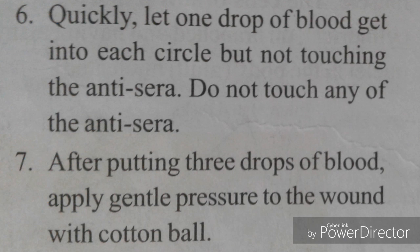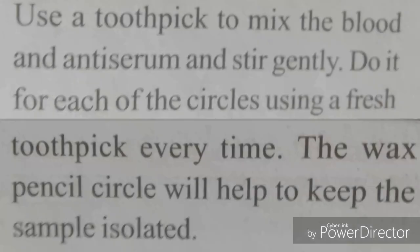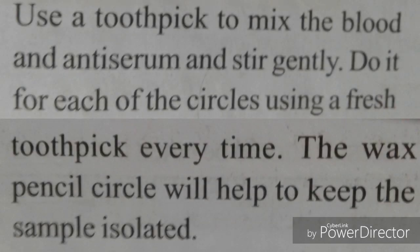Step 7: After putting 3 drops of blood, apply gentle pressure to the wound with the cotton ball. Dispose of the needle you have used — it is a disposable needle and should not be used by another individual. Step 8: Use a toothpick to mix the blood and anti-serum and stir gently. Do this for each of the circles using a fresh toothpick every time. The wax pencil circle will help to keep the sample isolated.